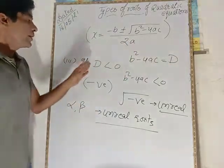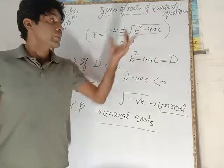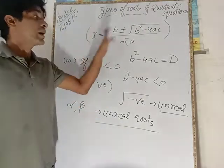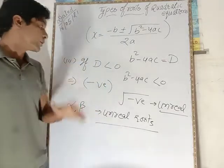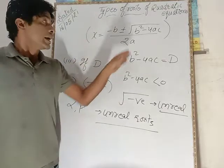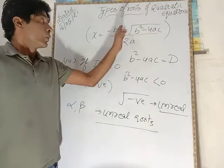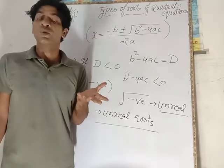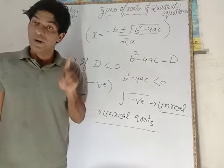If D is greater than zero, greater than zero means it is positive. Then square root of positive is always real and mathematically relevant. Then alpha and beta will be unique and real roots. Secondly, when discriminant is equal to zero, it means this square root system will be zero. Remaining minus b by 2a will be both values of x in quadratic equation, means alpha and beta will be equal.